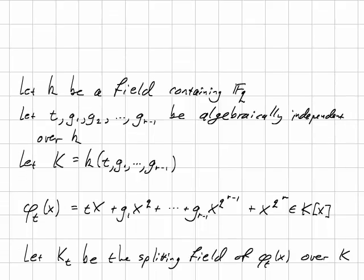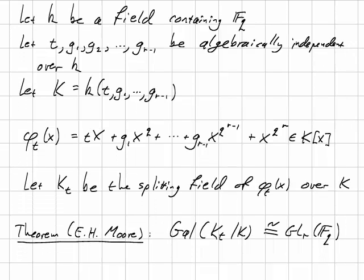So, we will put ourselves into the following situation. Let k be a field containing F_q, and pick r algebraically independent symbols, which I'm going to denote t, g_1, g_2, up to g_{r-1}, and consider the field K, which is k adjoining these r algebraically independent things. So this K is just an algebraic function field of transcendence degree r.